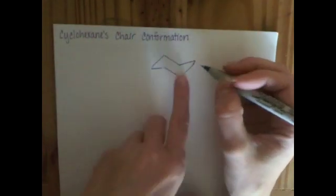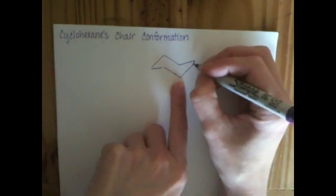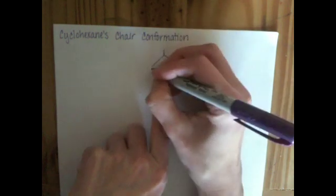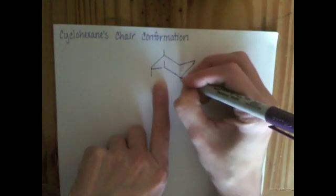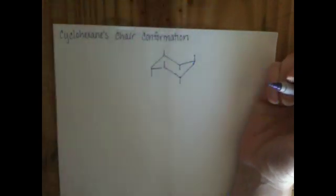And we try to represent this whenever necessary on the drawn line structure of the cyclohexane using this type of notation, alternating straight up, straight down substituents around the ring. Those are the purple axial substituents.